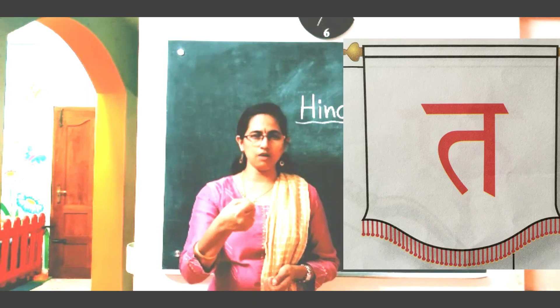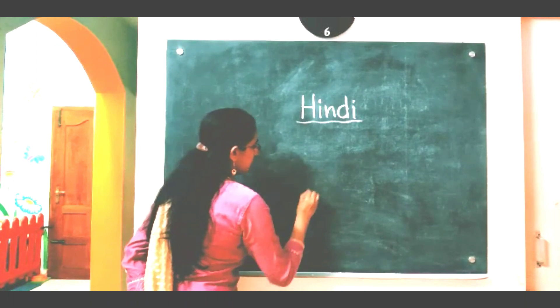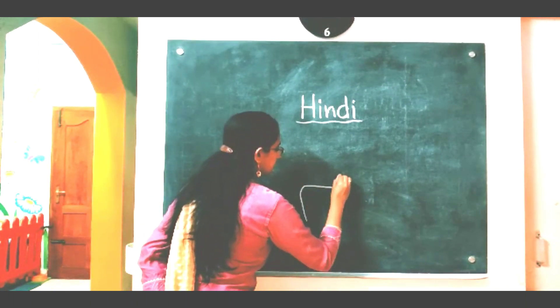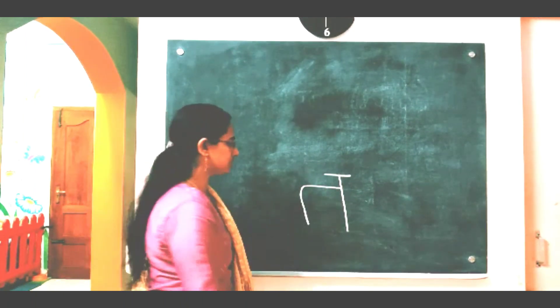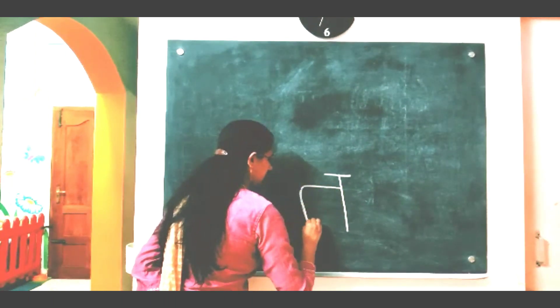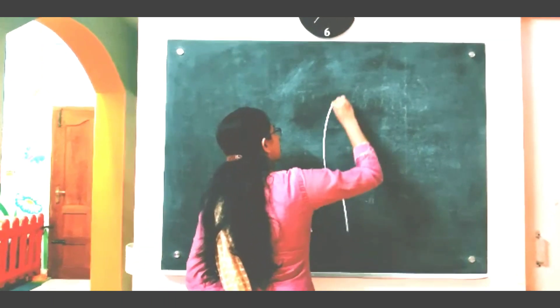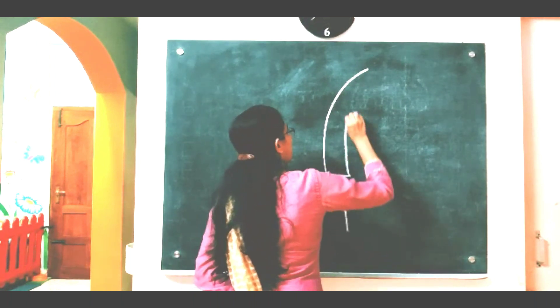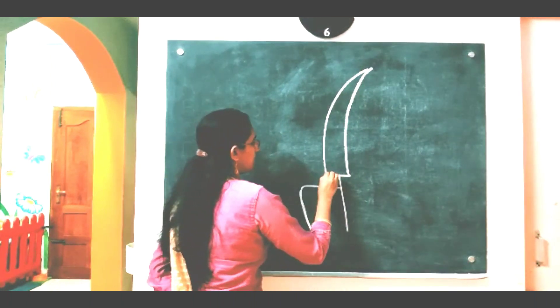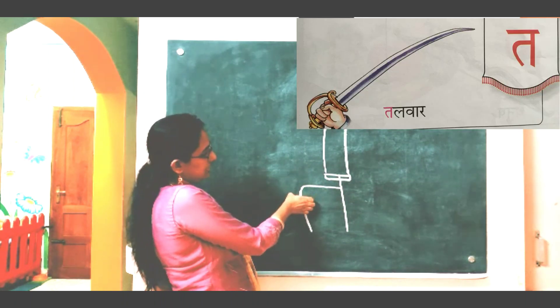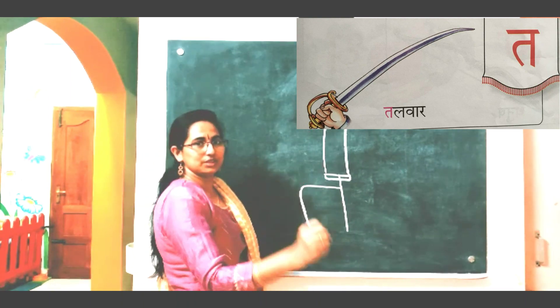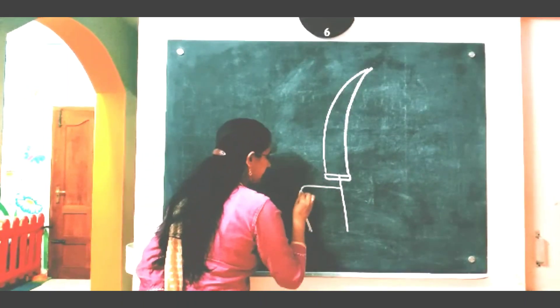Ta say Talwar. Talwar means sword, okay? Just see here. This is letter Ta. Ta say Talwar. Now see how I am going to draw a picture on this. This is Ta and this is your Talwar — a sharp Talwar. And this one is the holder. You are going to hold this one like this and use it. Ta say Talwar.